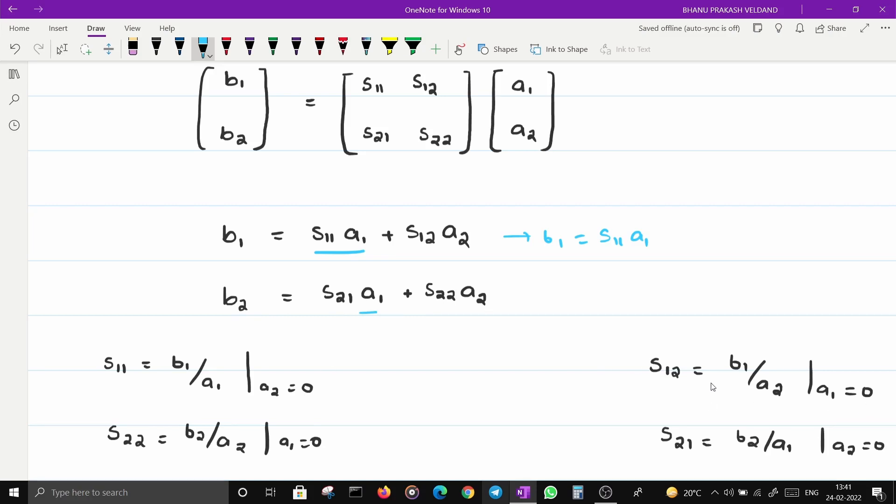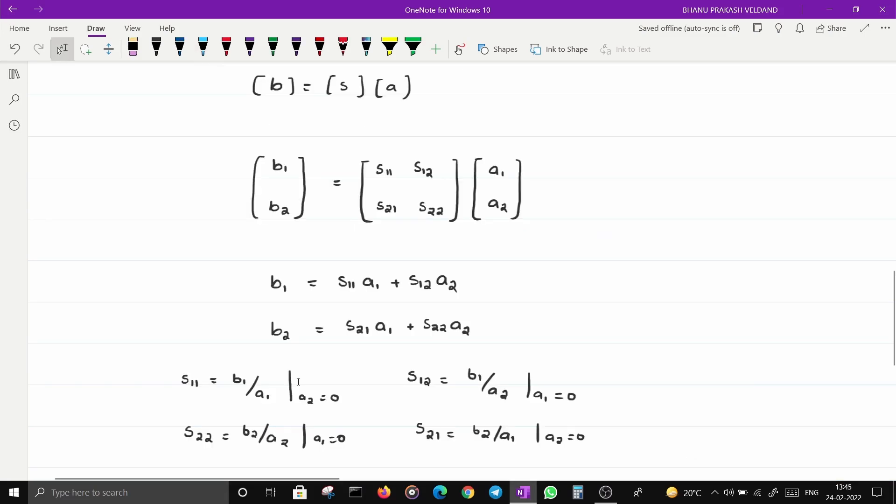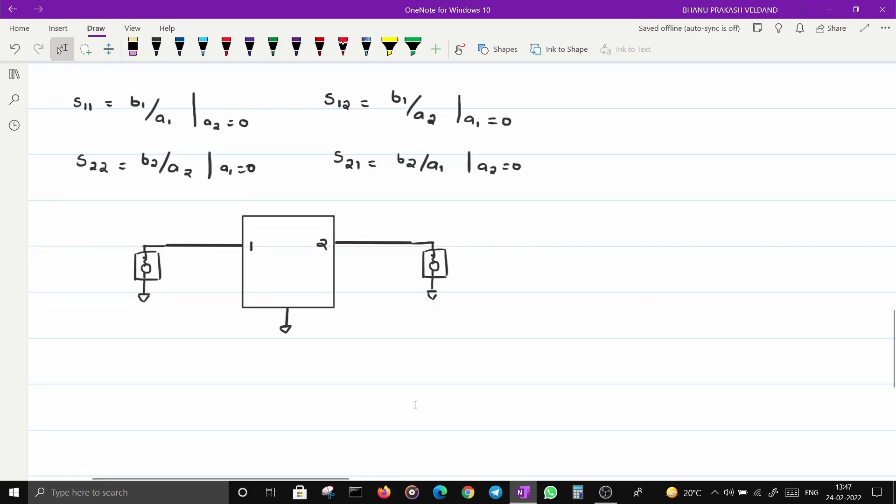When A1 becomes zero, B1/A2 will be S12. Now we have brought the whole equations to a stage where we can relate the S parameters with A1, B1, A2, B2. Let's try to understand what S11, S22, S12, S21 actually mean.